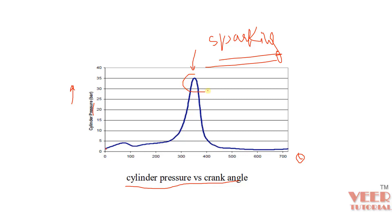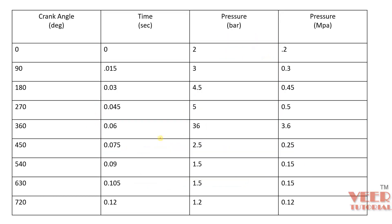We need to check whether this crankshaft will break or not at this maximum load. Hence we are going to apply a variable load — the pressure is not constant but changes with time. The crank angle values are 0, 90, 180, and 270 degrees, corresponding to time steps of 0.1 and 0.05 seconds. The pressure is given in bar and in megapascal. Now let's solve this problem in ANSYS.